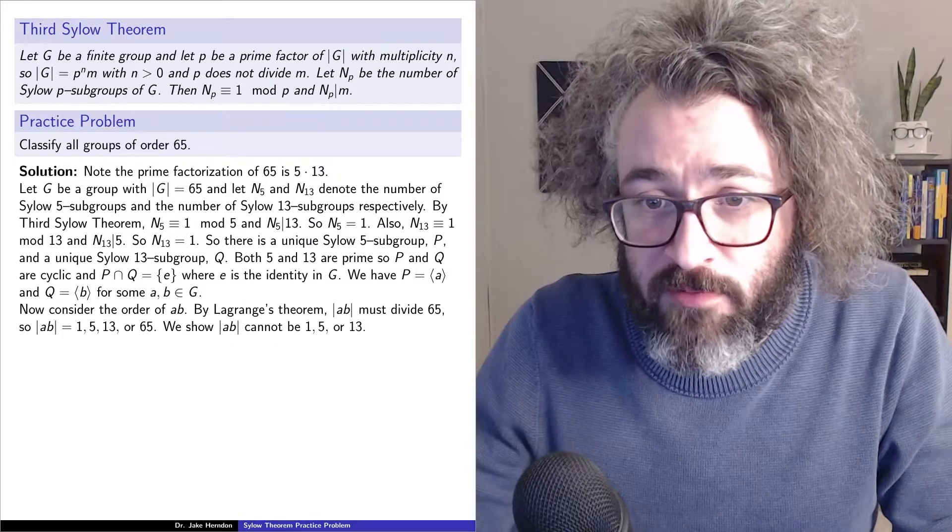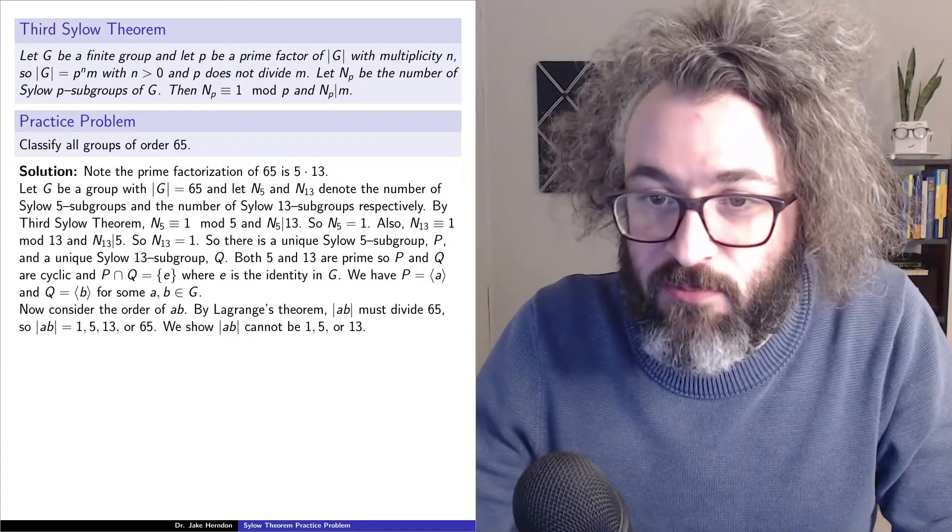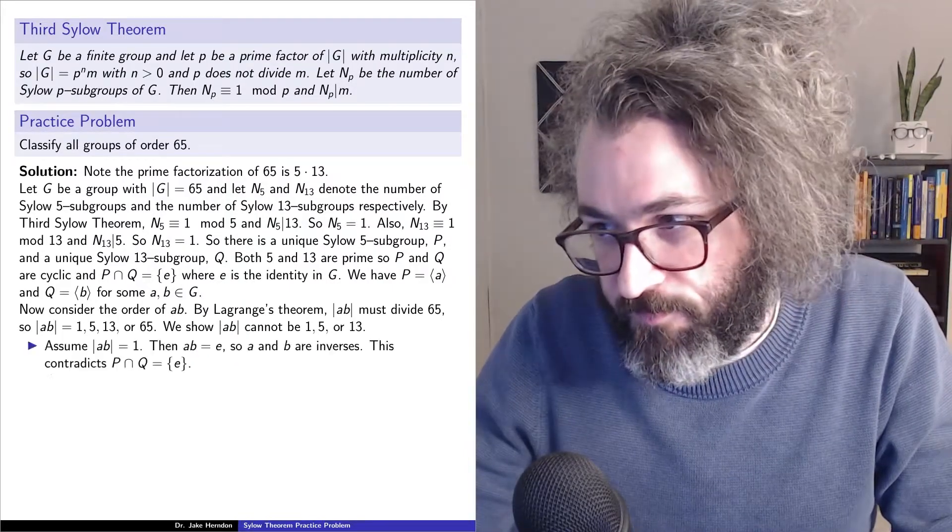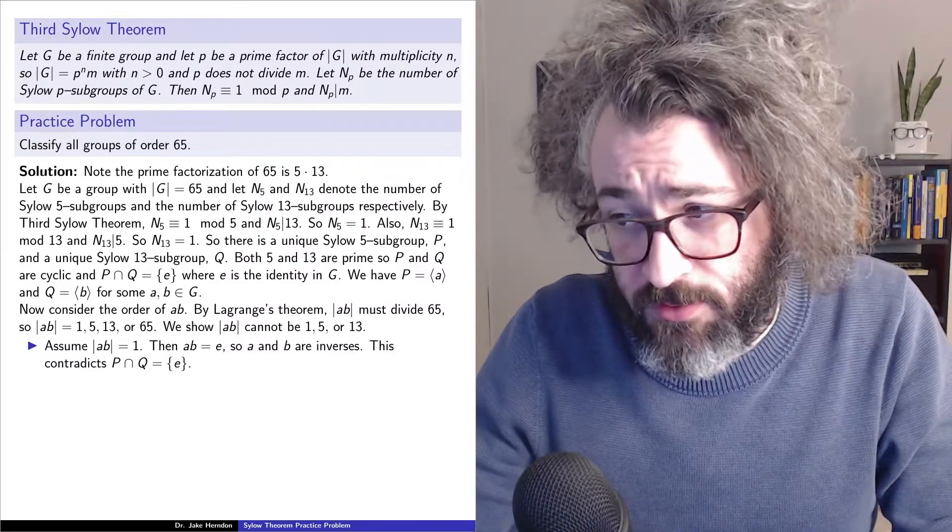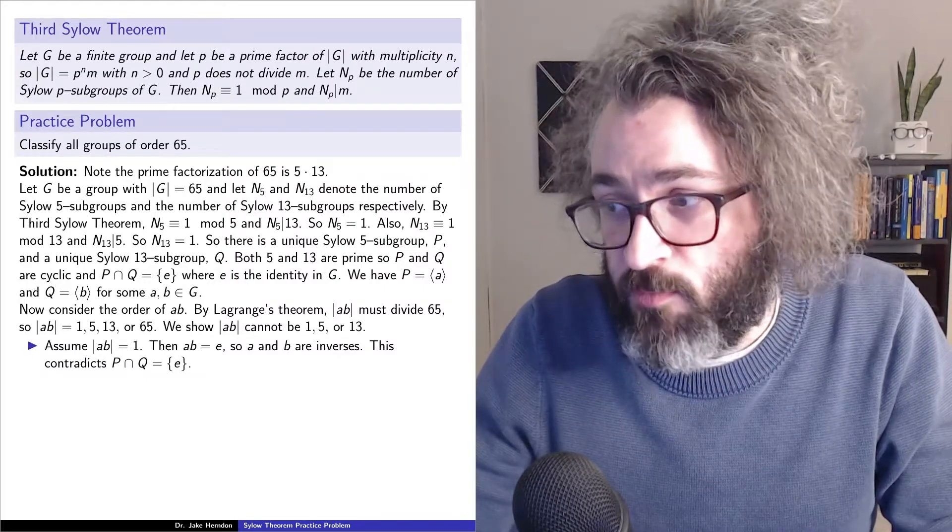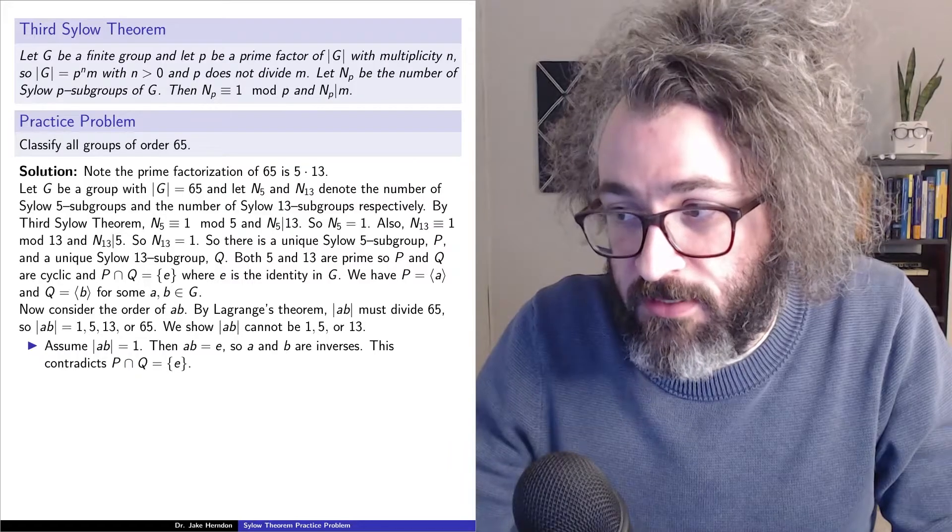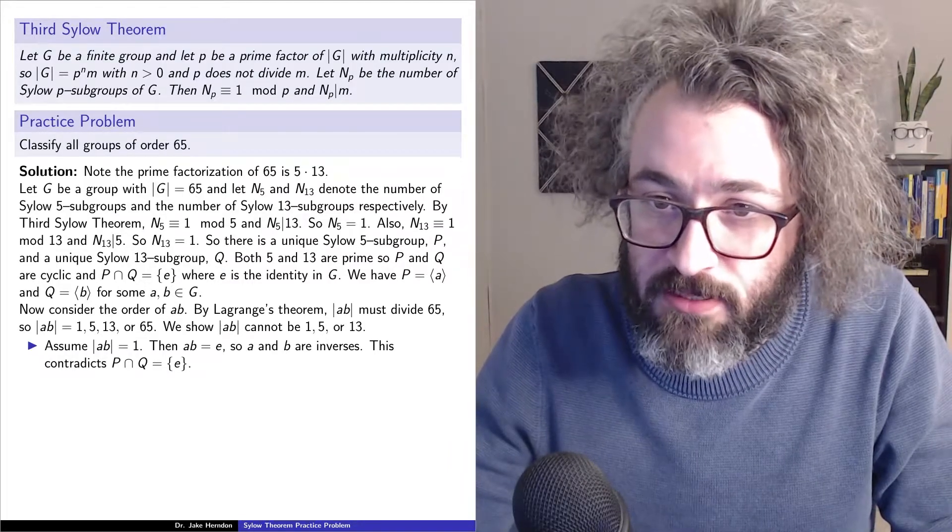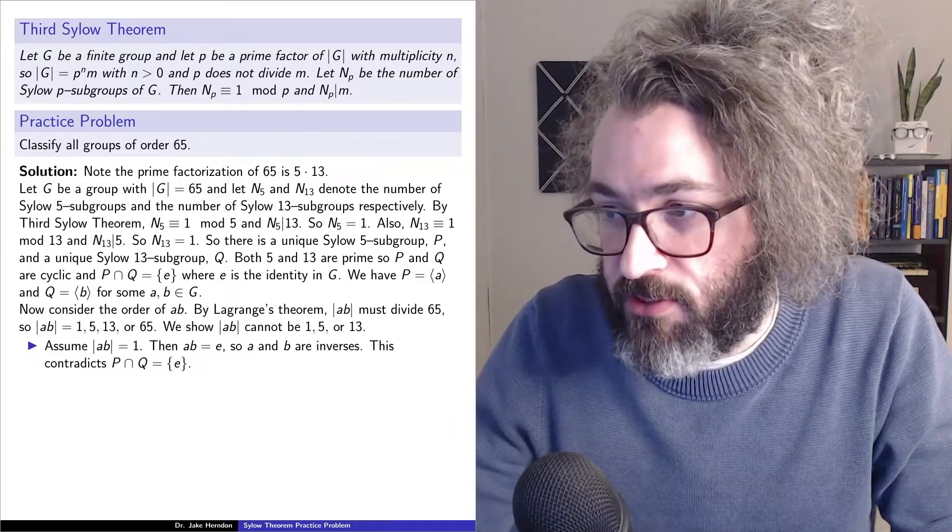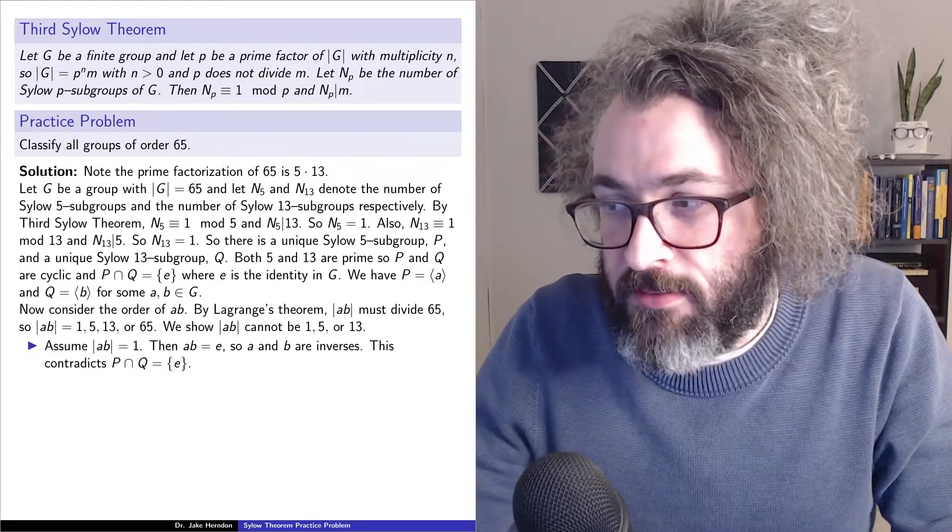So we're going to show that the order of a times b can't be 1, 5, or 13. Assume that the order of a times b is 1. So that means a times b is equal to the identity, and that means that a and b are inverses of each other.